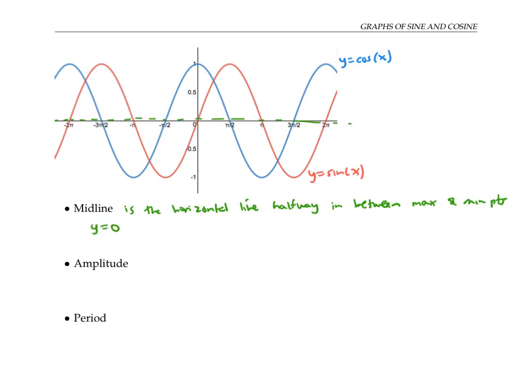The amplitude is the vertical distance between a maximum point and the midline. You can also think of the amplitude as the vertical distance between a minimum point and the midline, or as half the vertical distance between a min point and a max point. For the cosine function and sine function, the amplitude is one.